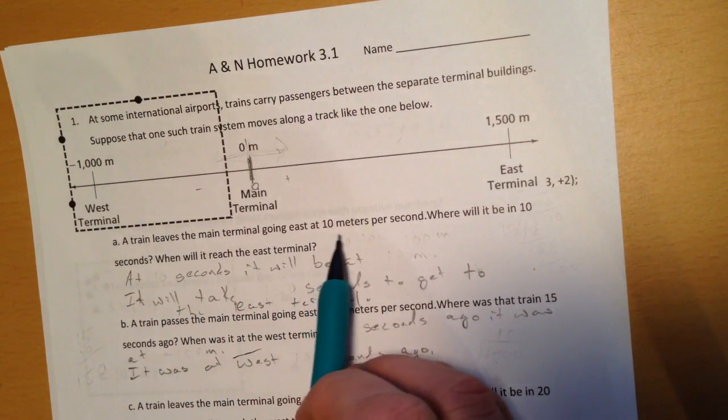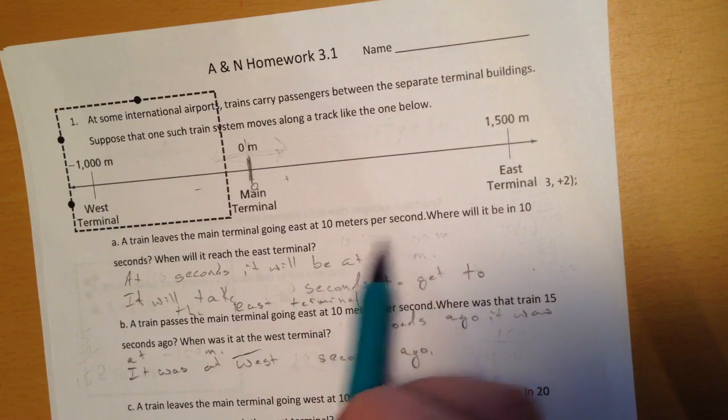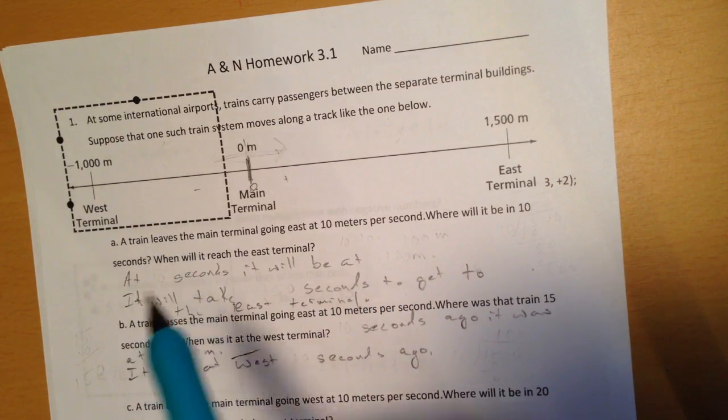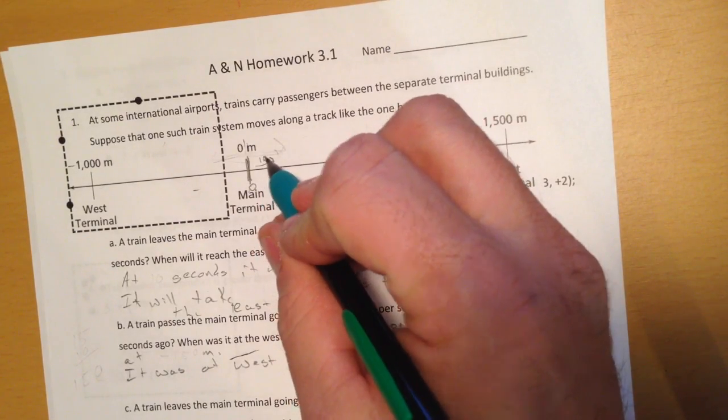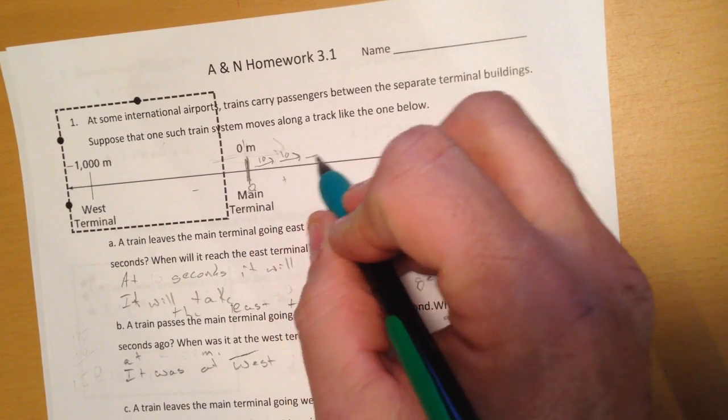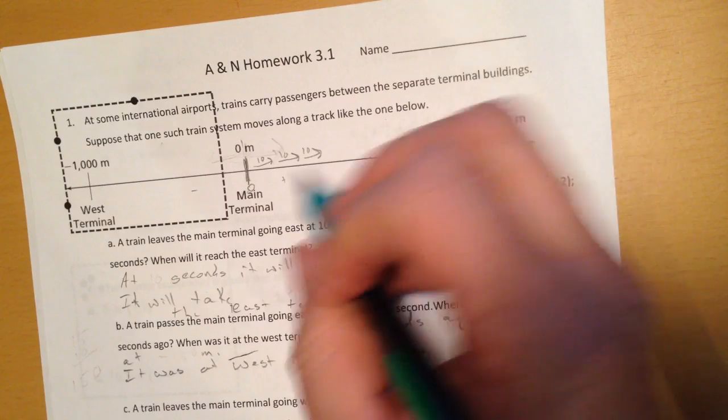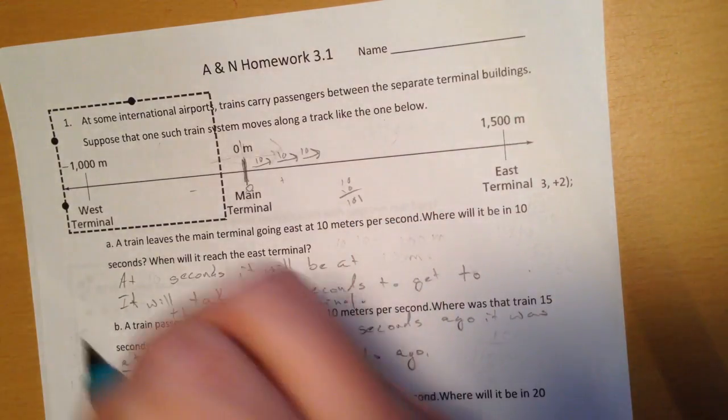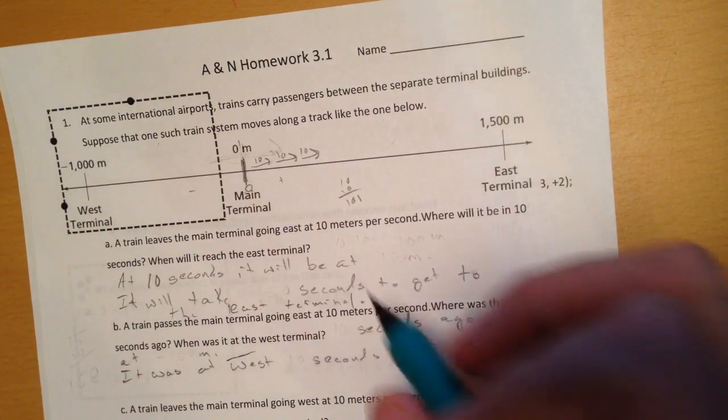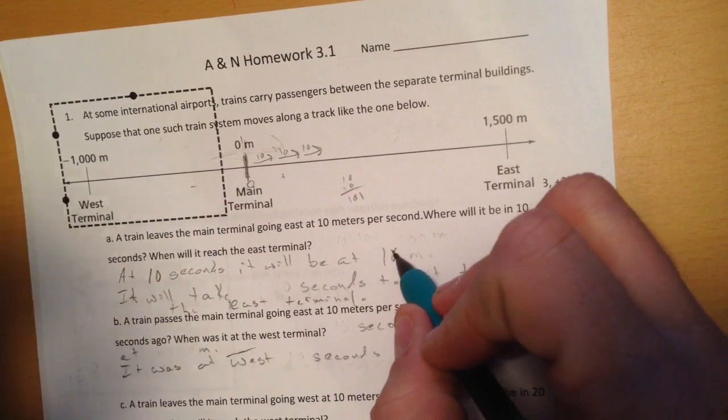Now if the train leaves the main terminal going 10 meters per second, where will it be in 10 seconds? Well, if it's going 10 meters per second, so that's 10, 10, 10—there's 3 seconds, I'm going to count up to 10—so that's 10 times 10, or 100. So at 10 seconds, the train will be at 100 meters.